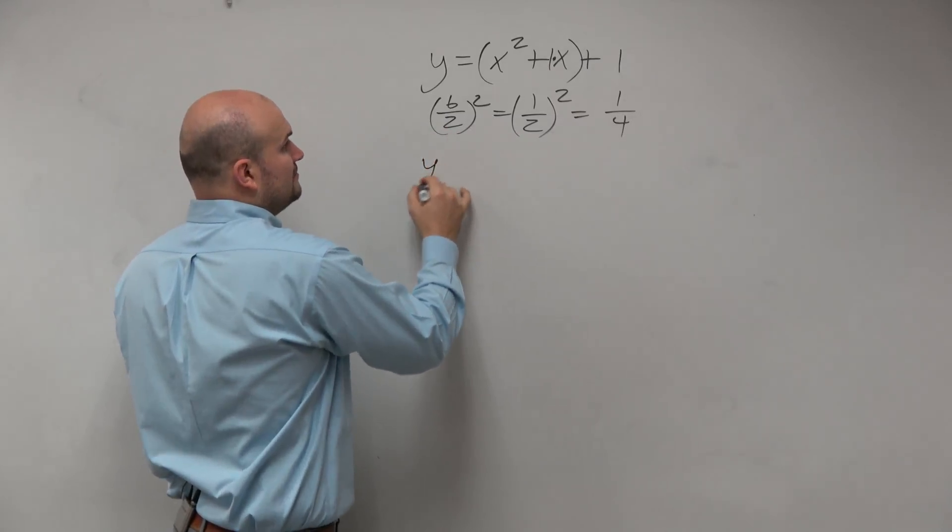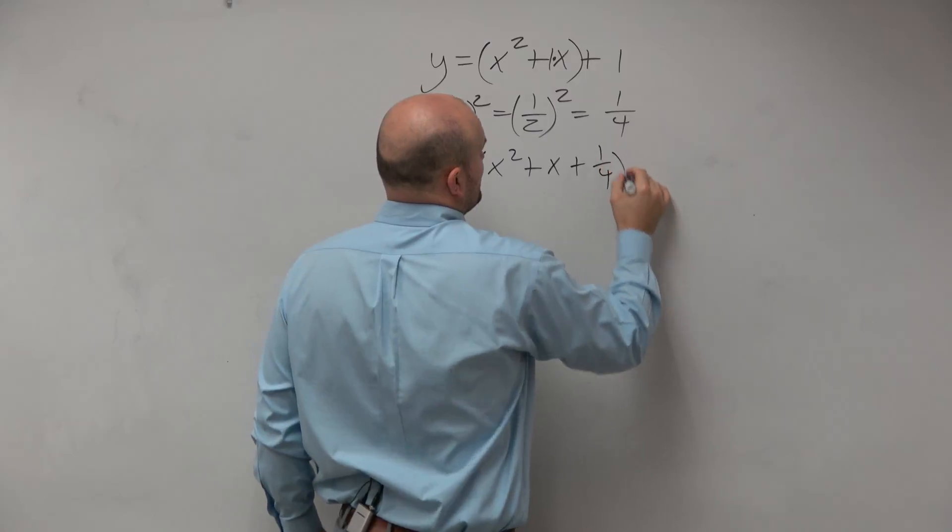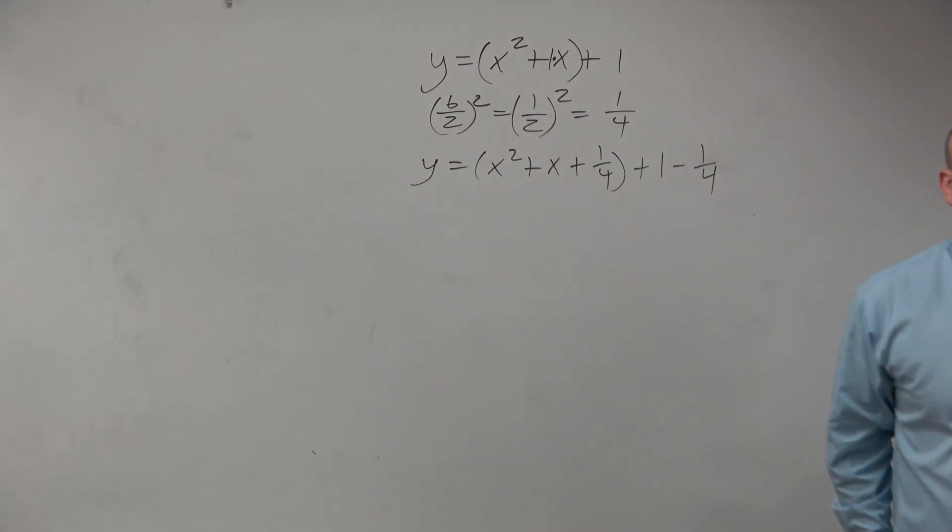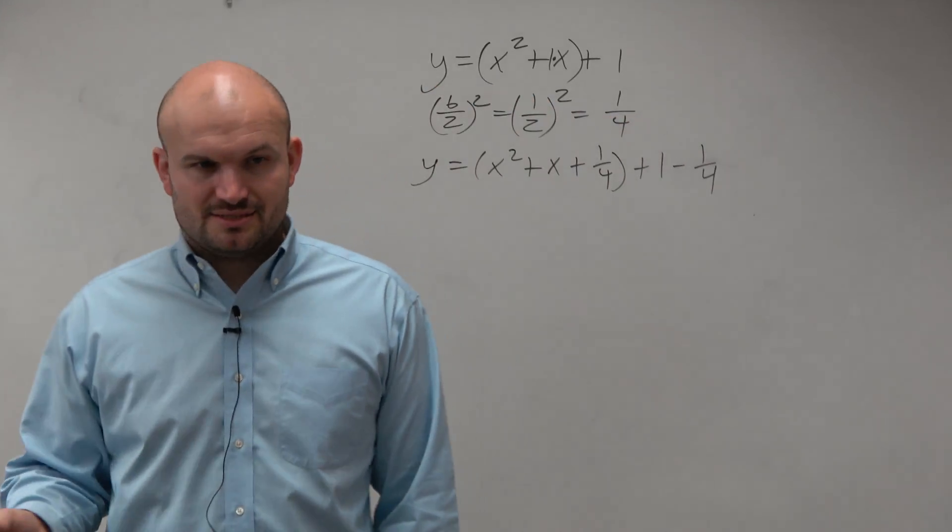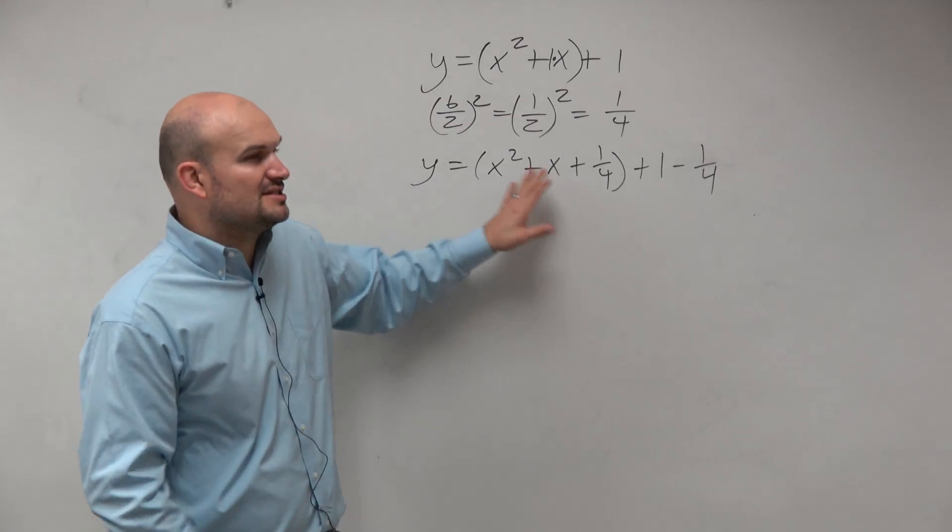So we're still going to apply the same thing. x squared plus x plus 1 fourth plus 1 minus 1 fourth. OK, here's where everybody overthinks this. Everybody overthinks this. Here with fractions, it's not so bad.